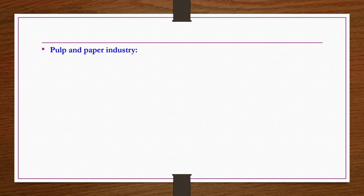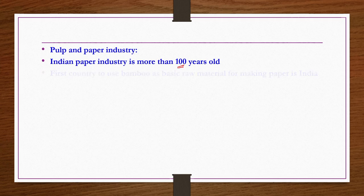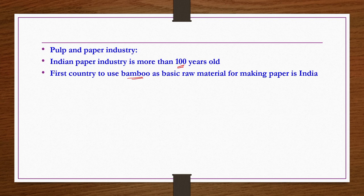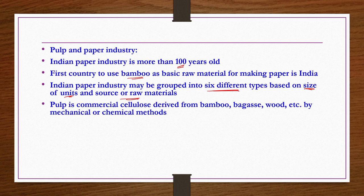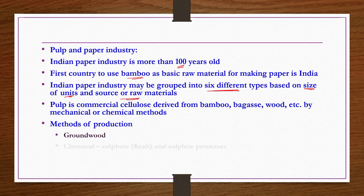Next is pulp and paper industry. Indian paper industry is more than 100 years old and is the first in the world to use bamboo as the basic raw material for making paper. Depending on size of units and sources of raw materials, Indian paper industry may be grouped into 6 different types. Pulp is commercial cellulose derived from bamboo, bagasse wood, etc. by mechanical (ground wood) or chemical methods (sulphate and sulphide processes, and semi-chemical processes).